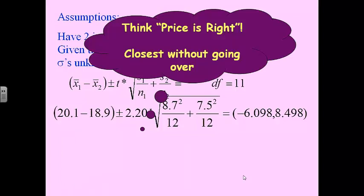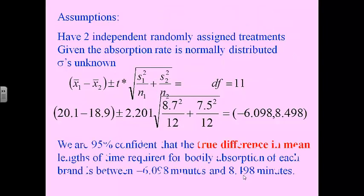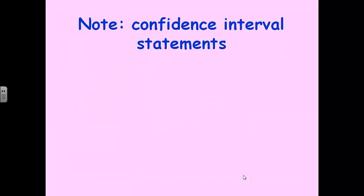The reason we're using t* for degrees of freedom 11 at a 95% confidence interval — always think Price Is Right: closest without going over. You never want to go over your degree of freedom; it's always better to go underneath. Then do your conclusions: we are 95% confident — and that's in red because it's important — that the true difference in mean lengths of time required for bodily absorption of each brand is between negative 6.098 minutes and 8.498 minutes. You'd want to specify which you subtracted, A minus B or B minus A, to make that very clear.